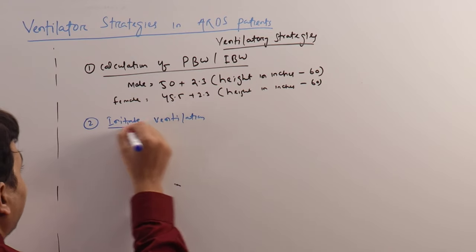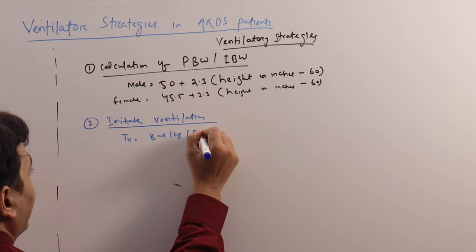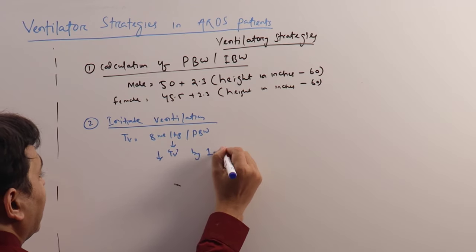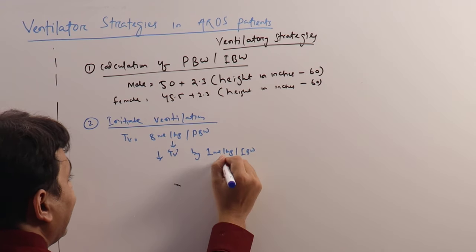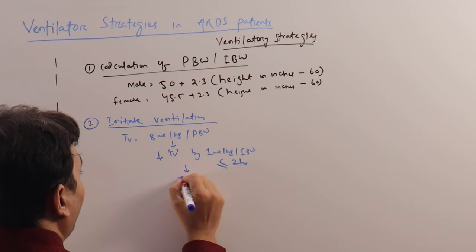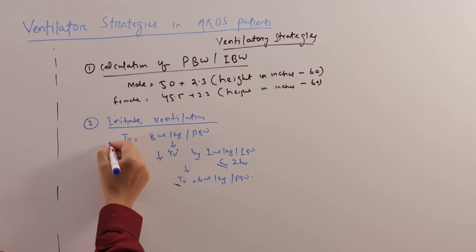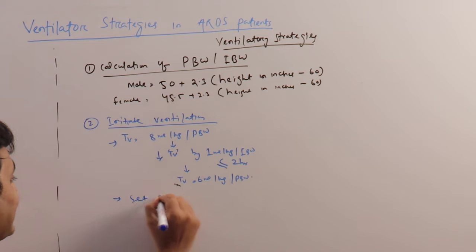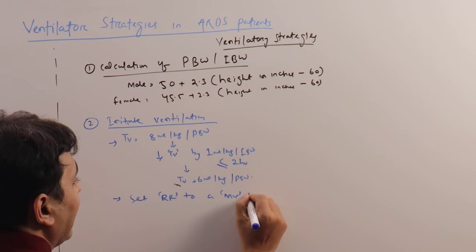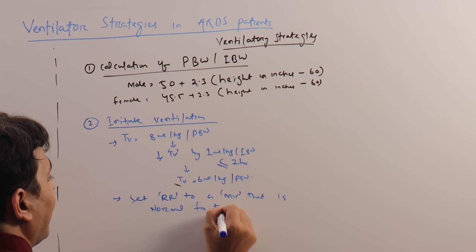Once you have calculated the predicted body weight, the next step is to initiate ventilation. Choose a tidal volume of 8 ml per kg of predicted body weight in the beginning, and decrease tidal volume by 1 ml per kg of ideal body weight every ≤2 hours until we reach a tidal volume of 6 ml per kg of predicted body weight.